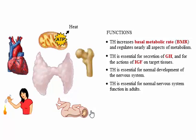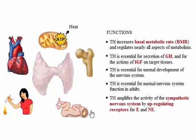Thyroid hormone is essential for normal function of the nervous system in adults. Absence of or low levels of thyroid hormone lead to slowed mental processes. Thyroid hormone amplifies the activity of the sympathetic nervous system by up-regulating beta-adrenergic receptors for epinephrine and norepinephrine.